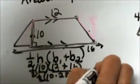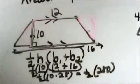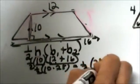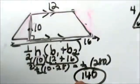Then we have to take half of 280 so we get 140 as our area and that is the area of the trapezoid.